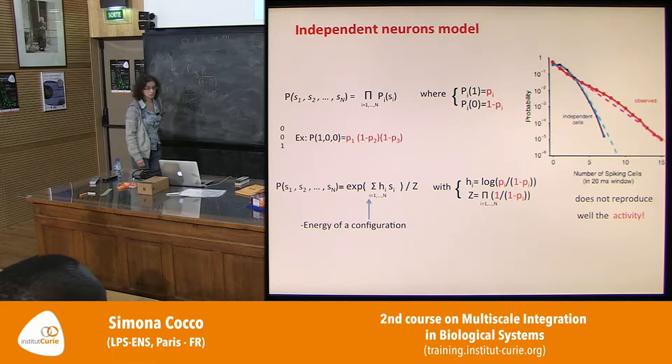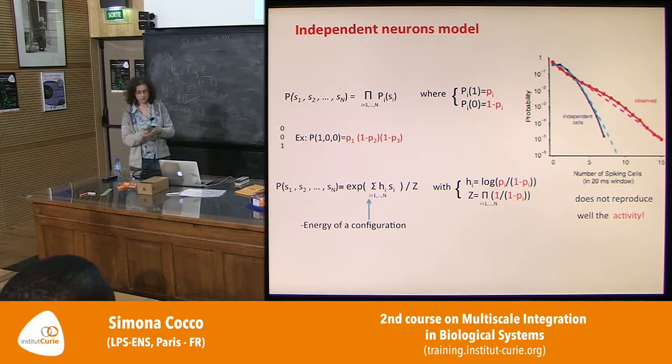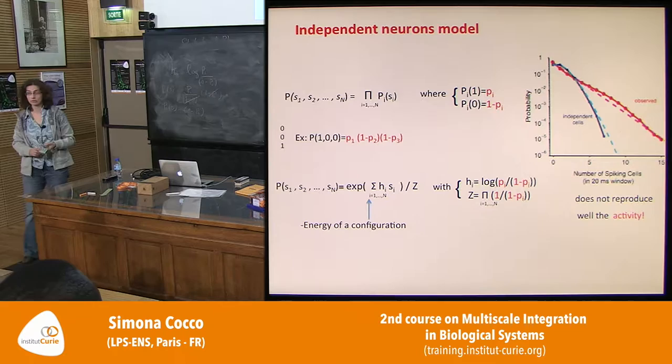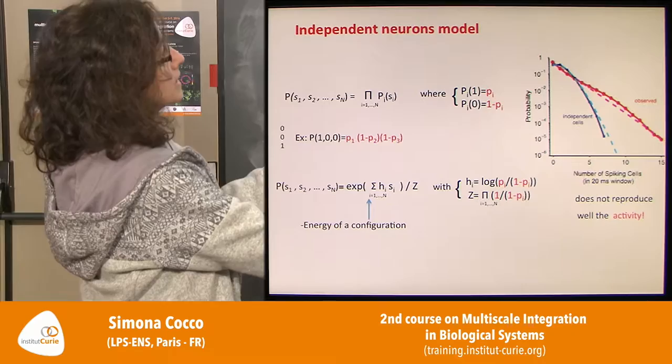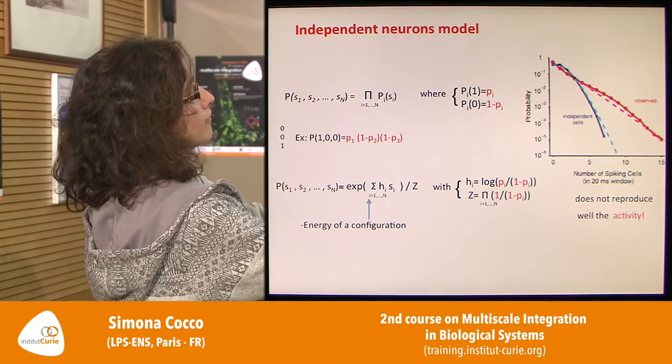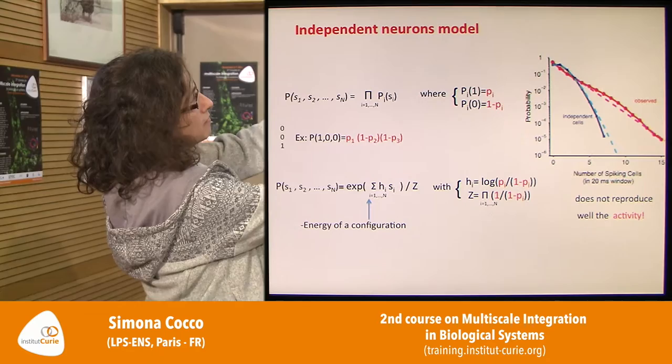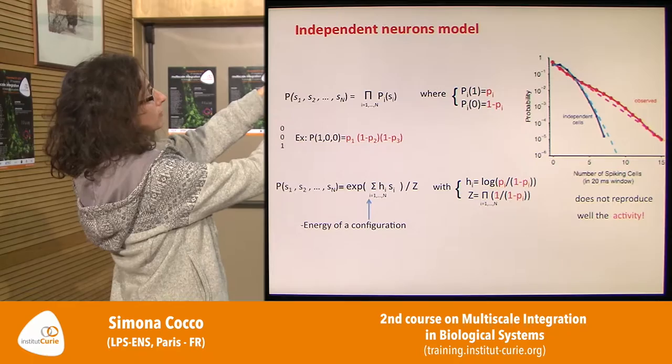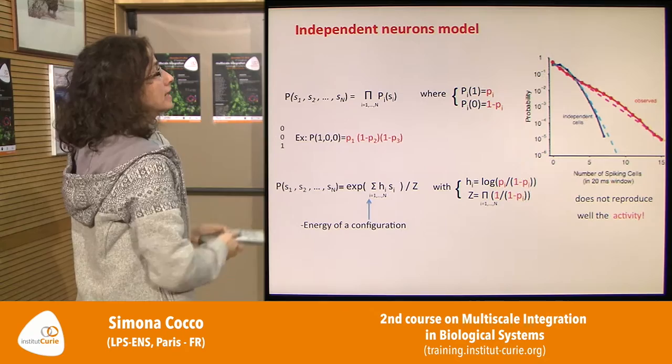There is a very nice justification for using this Ising model in terms of information theory: this probability distribution is the maximum entropy distribution if you only want to impose knowledge of the first and second moments. This is the maximal entropy principle by Jaynes in 1957 — the Ising model is the maximum entropy model that fits the first and second moments of the distribution.